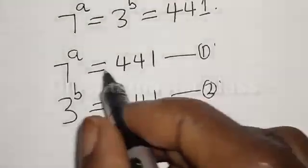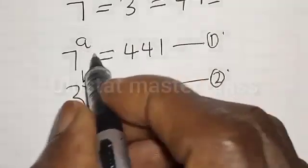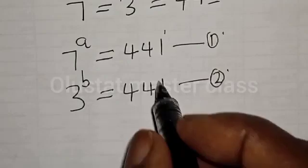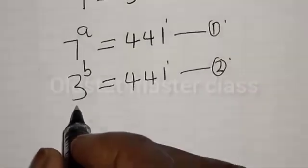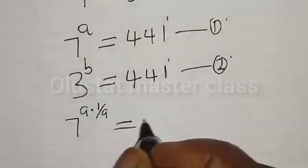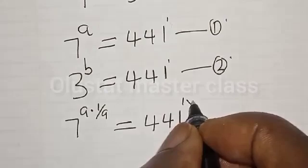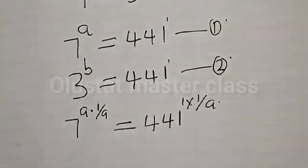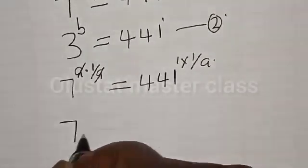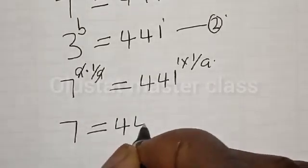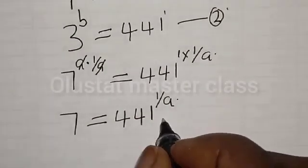Now, from equation 1, let's multiply the exponent by 1 divided by A. So, 7 raised to power A multiplied by 1 over A is equal to 441 raised to power 1 multiplied by 1 divided by A. Then we have 7 is equal to 441 raised to power 1 over A. Let's call this equation star.